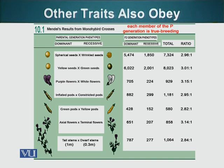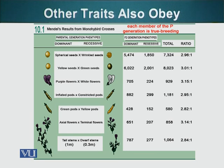Mendel did not restrict himself to just the seed shape. He did similar experiments with other traits and characters of the plant, but he always got the same result. When he crossed the F1 generation, the F2 generation had the same ratio — three to one. Three dominant to one recessive, whether it was seed shape, seed color, flower color, the shape of the pod, the color of the pod, the position of the flower, axial or terminal flowers, or the size of the plant. Mendel did not draw his conclusions from just one experiment; he did thousands of these breeding experiments over several years and then came up with his law of segregation.